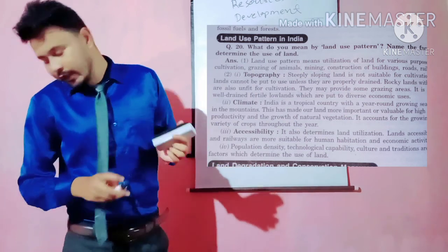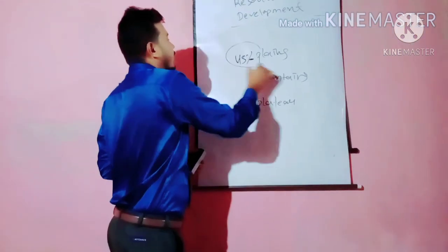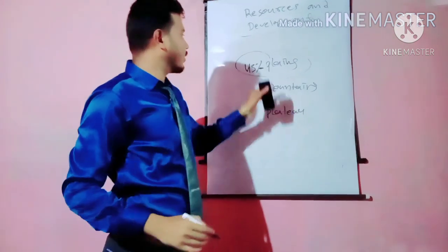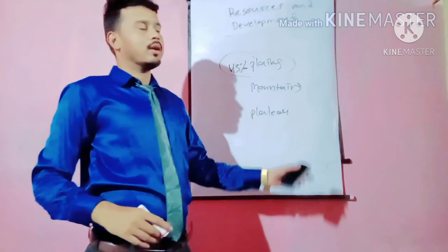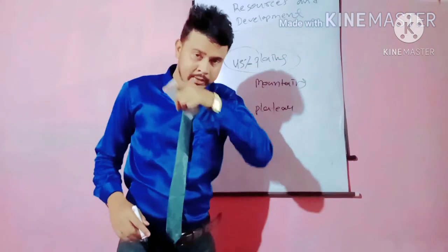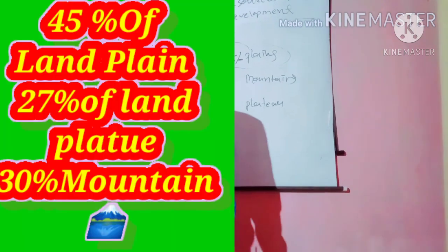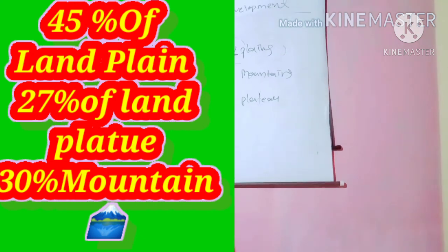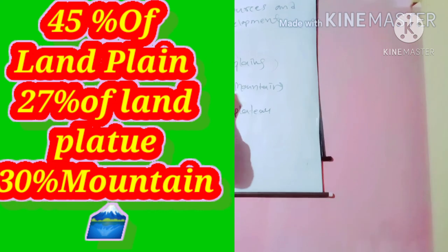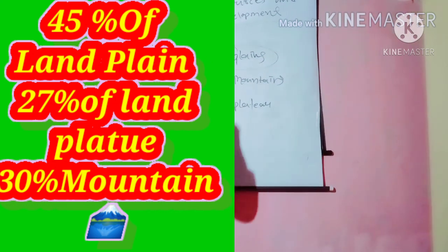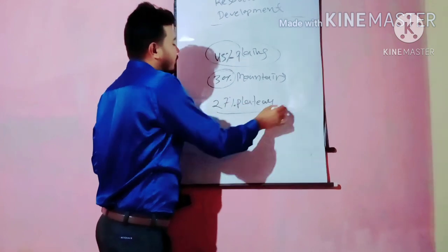43 percent of land is available for plains where agriculture is practiced and industries are established. 30 percent of land is mountainous, and 27 percent of the total land area consists of plateaus.